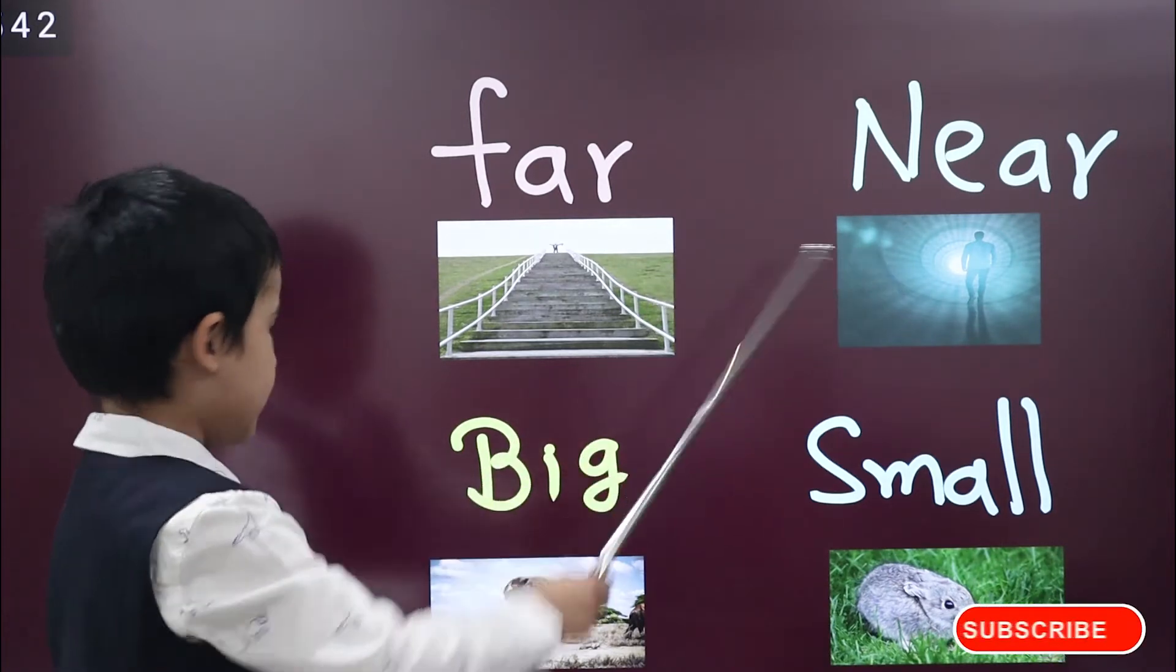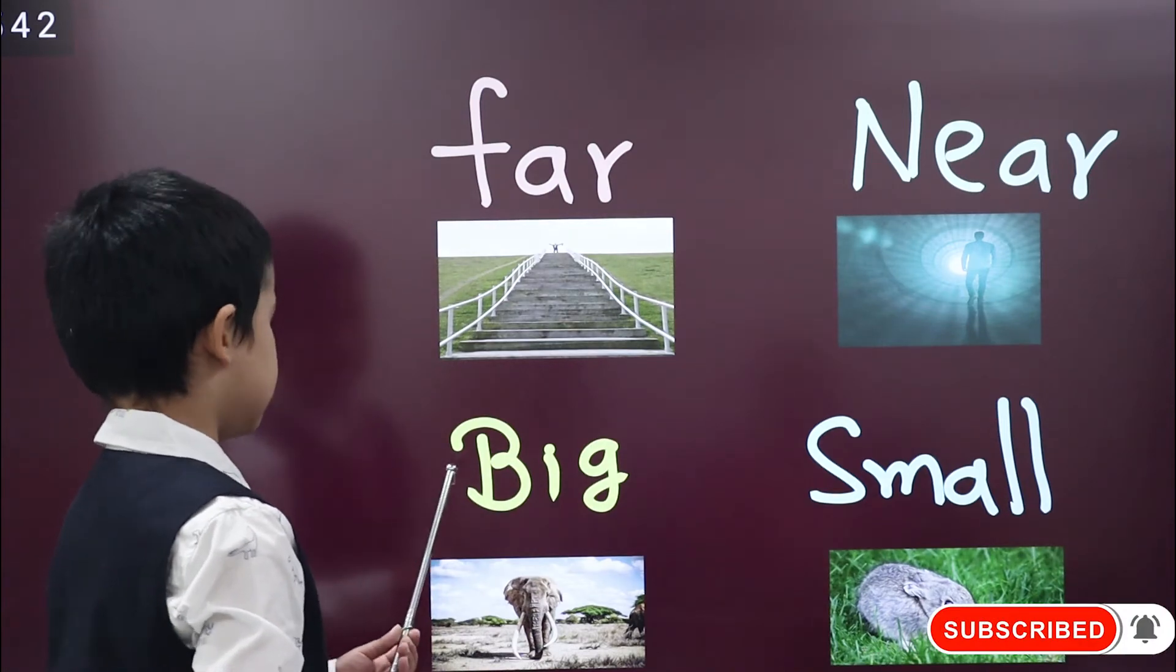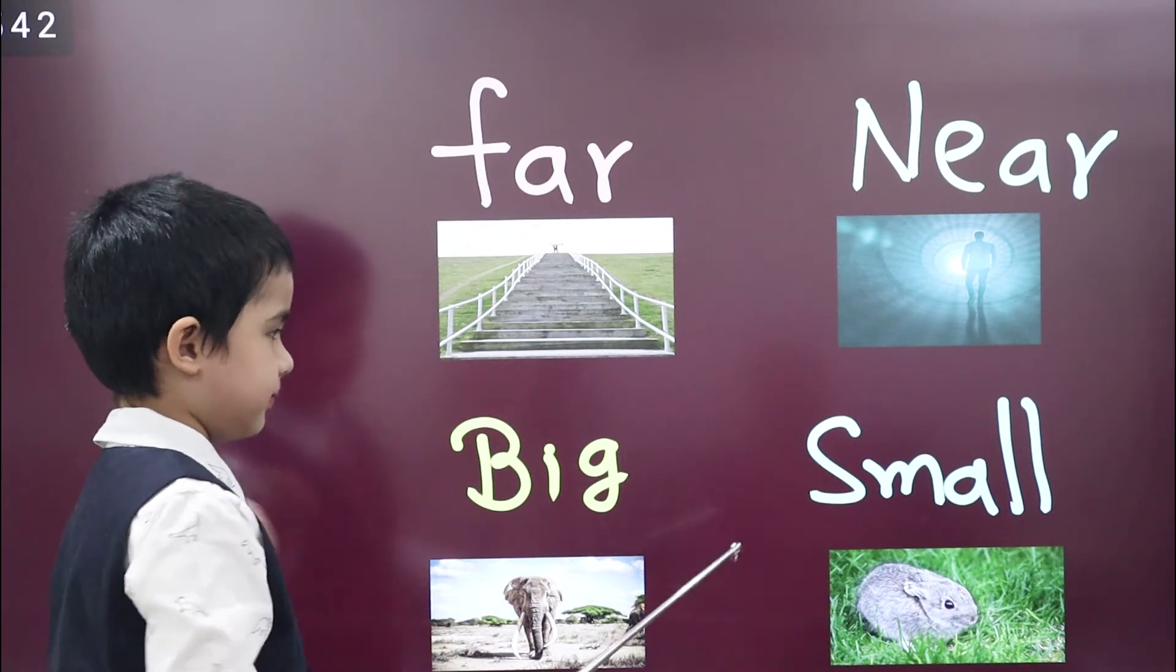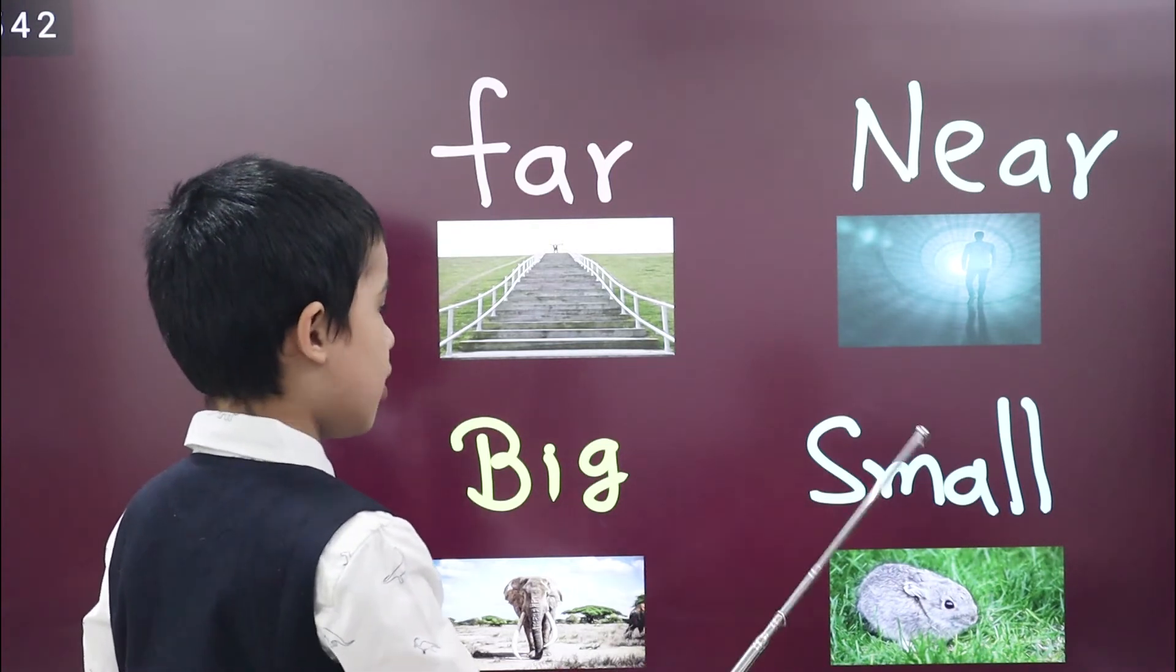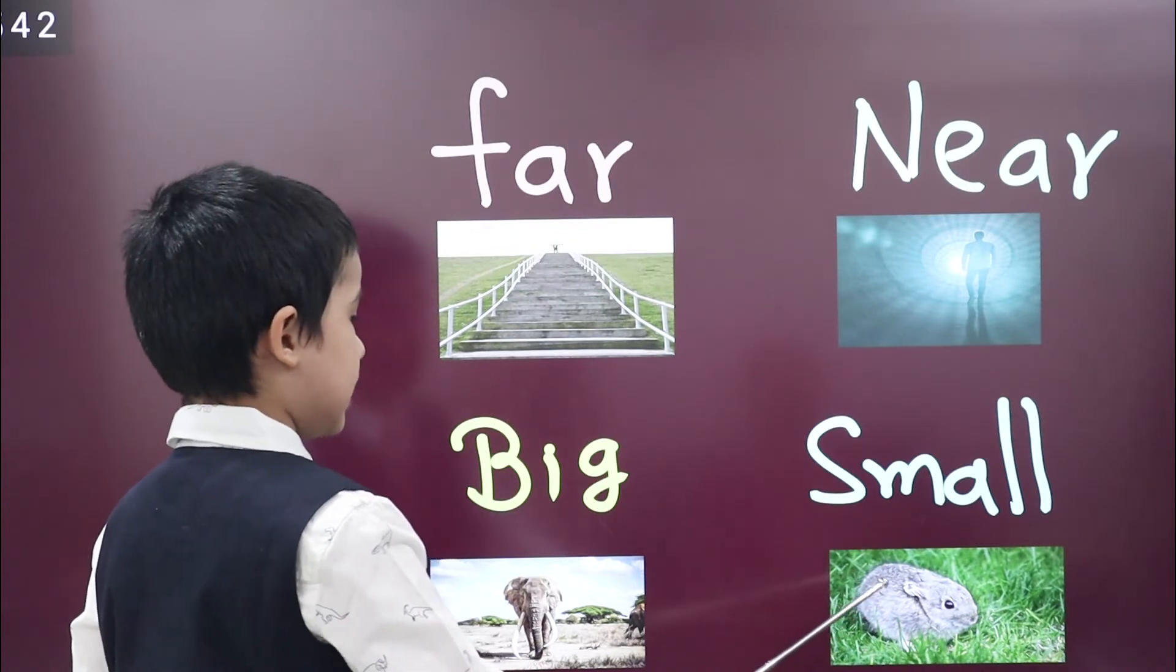Next word is big. Elephant is very big animal. Opposite of big is small. The rat is very small.